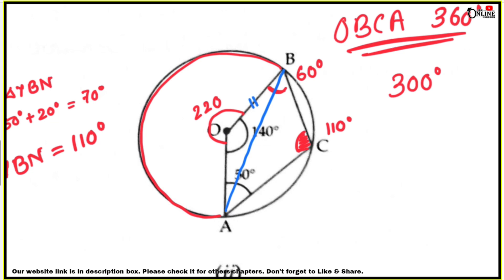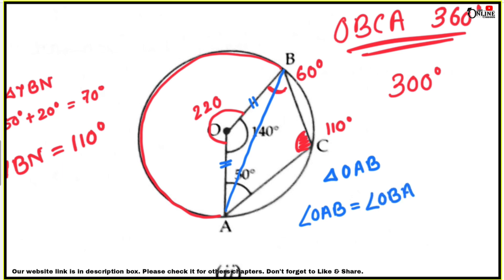To find angle OAB, connect AB. Since OA and OB are both radii of the same circle, triangle OAB is an isosceles triangle. Therefore angle OAB equals angle OBA.